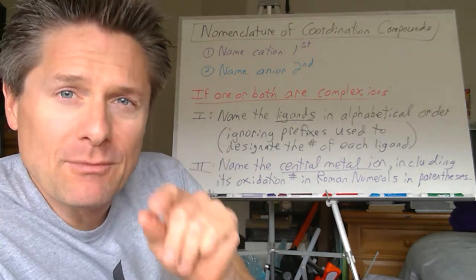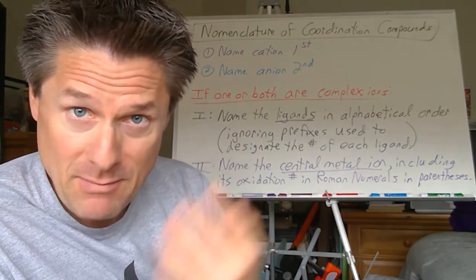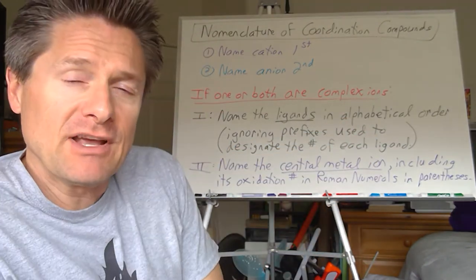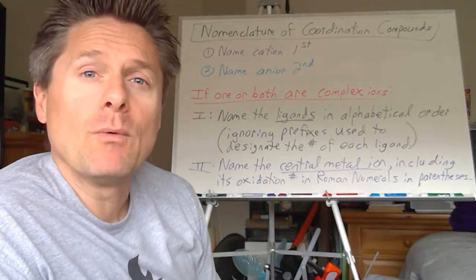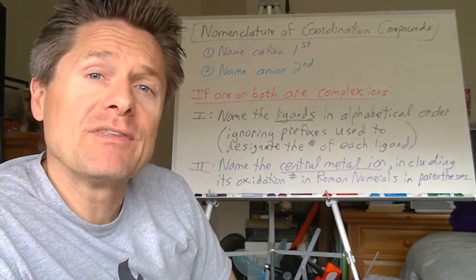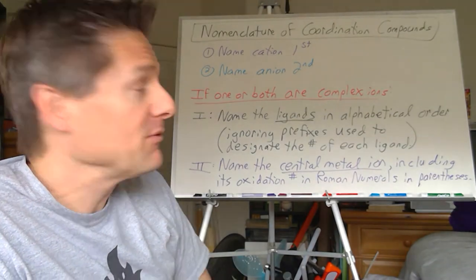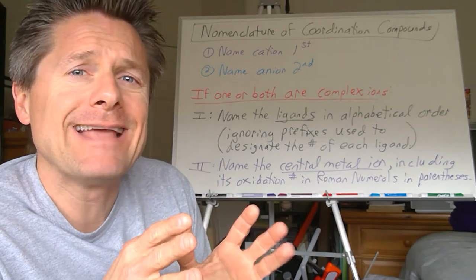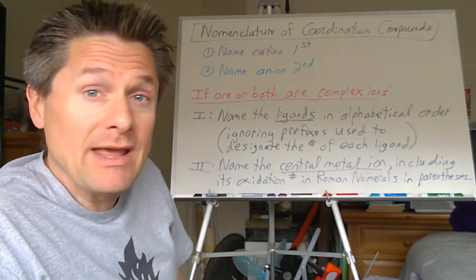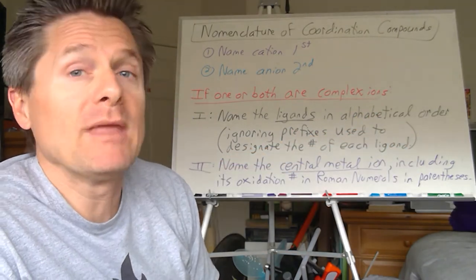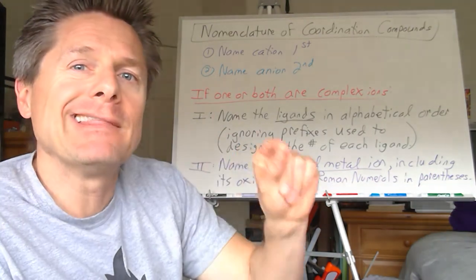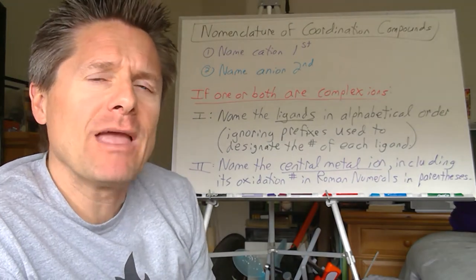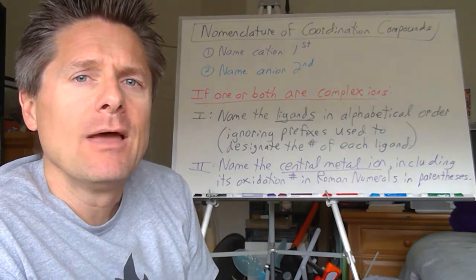A lot of times you just have one type of ligand, but more often than not you're going to have two, three, maybe four different types of ligands attached to that central metal ion. We're going to list those in alphabetical order. I'm doing this based out of our general chemistry notes. So we're going to identify all the ligands attached to that central metal ion, figure out their names, and list them in alphabetical order. I'm going to do the same thing when I write the formula — list the ligands in alphabetical order.